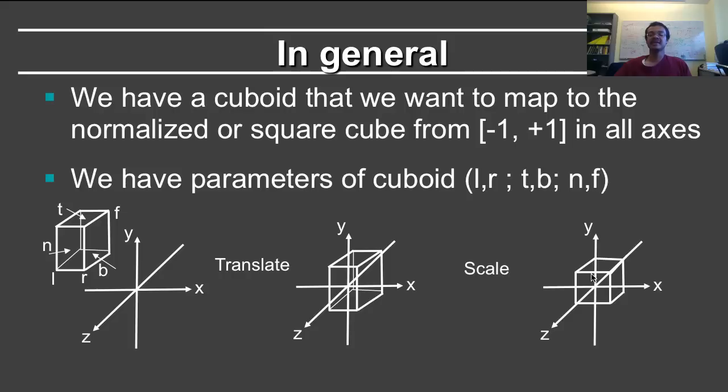Of course, you can argue that this mapping is still in three dimensions, so what's going on? But the idea is that once we mapped it to the unit cube, then we can just drop the z coordinate and look at the x, y coordinates.